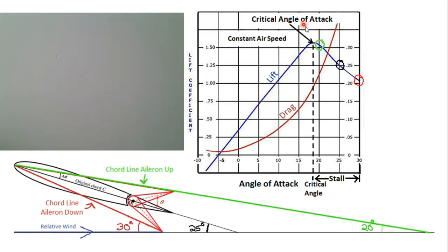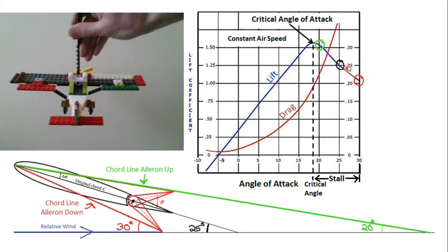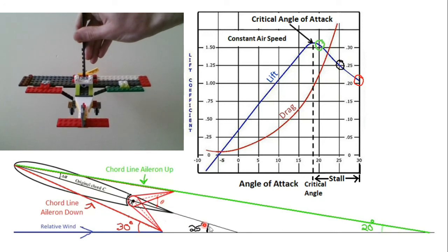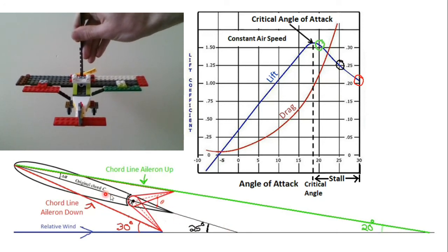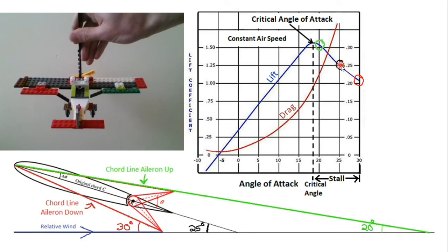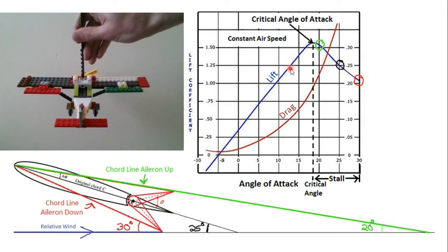But if we get past our critical angle of attack, past that angle of attack that gives us the maximum possible lift at that airspeed, then changing the angle of attack is going to work backwards. We'll start out here in the black. We'll say that's a 25-degree angle of attack. The airplane's stalled, but it's still generating a fair amount of lift, as much as you would generate at a 14-degree angle of attack. So you should still be able to fly like that.